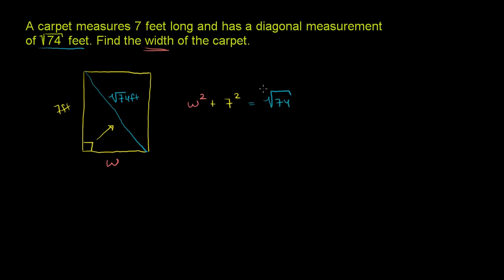Square root of 74 squared. And then we get W squared plus 49 is equal to the square root of 74 squared. Well, that's just going to be 74.